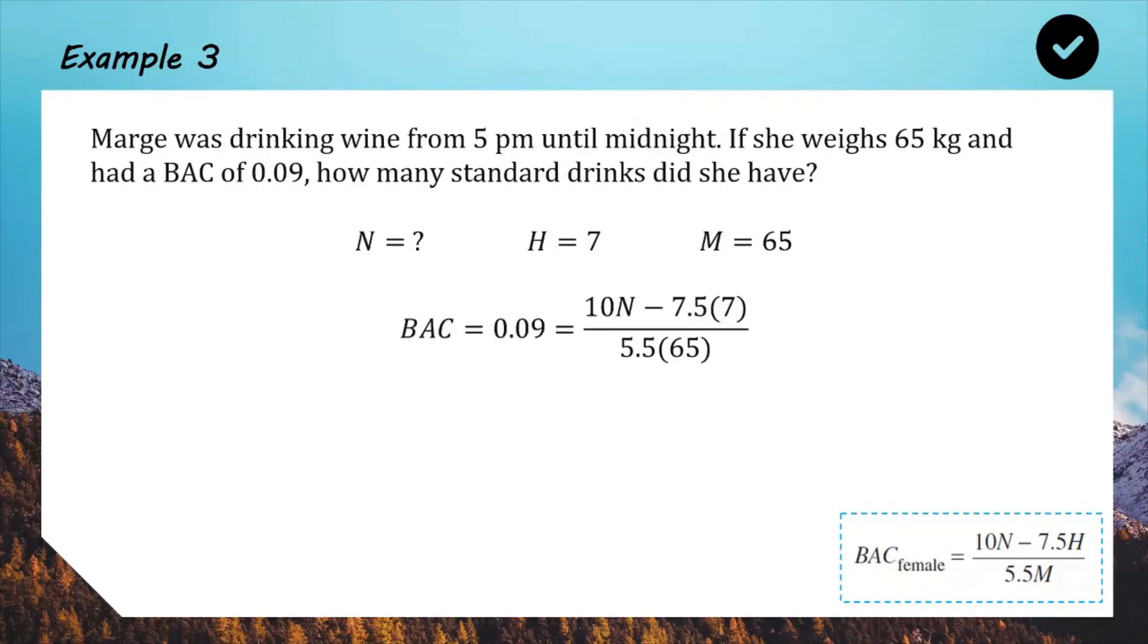So we're going to take our formula, and we're going to substitute in the information that we do have, which is BAC. We already know that. The question said she has a rating of 0.09. Number of standard drinks, we don't know. That's why it's N. We're just leaving that for now. H for hours is 7. That's from 5 till midnight. And her mass is 65 kilograms. So if we do a bit of calculating here, we get that 7.5 times 7 is 52.5, and 5.5 times 65 is 357.5. And now the task for us is solve this equation for N.